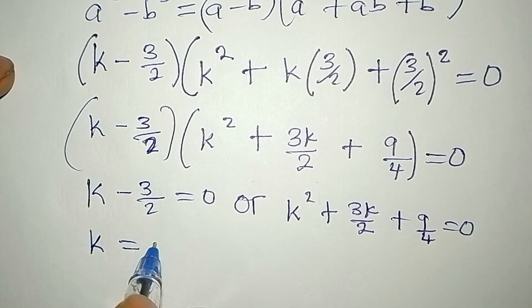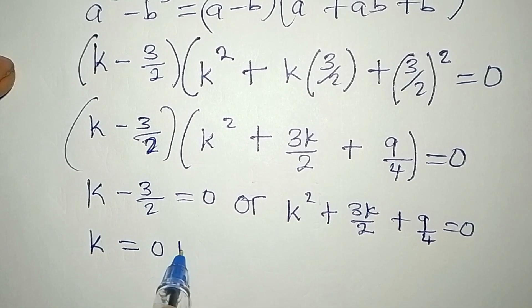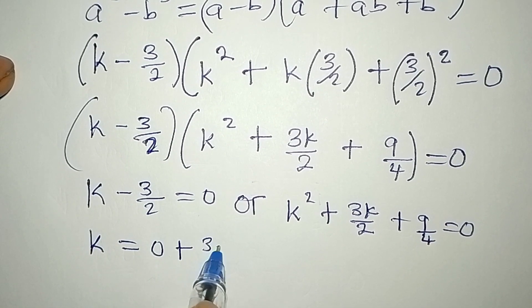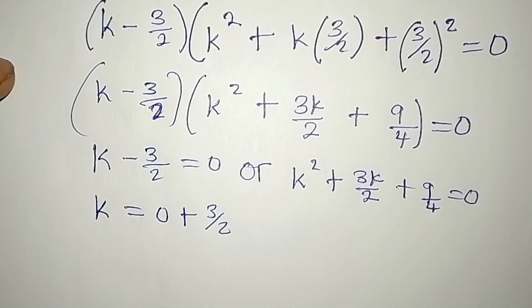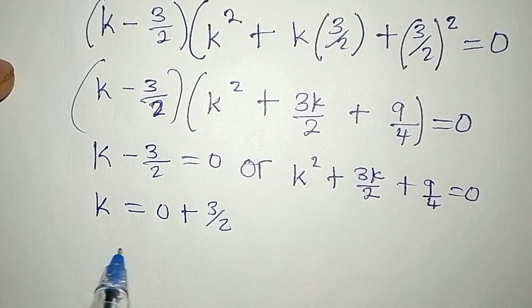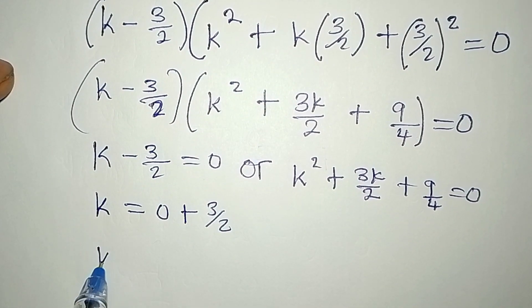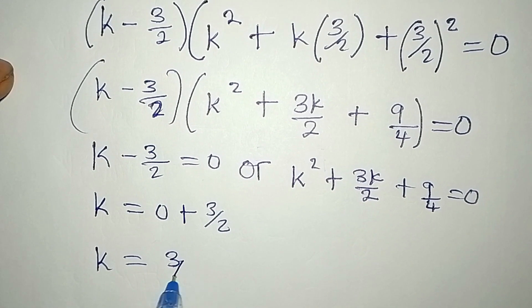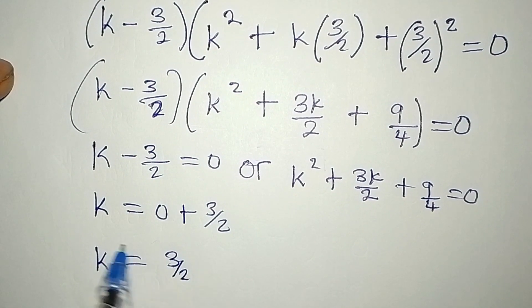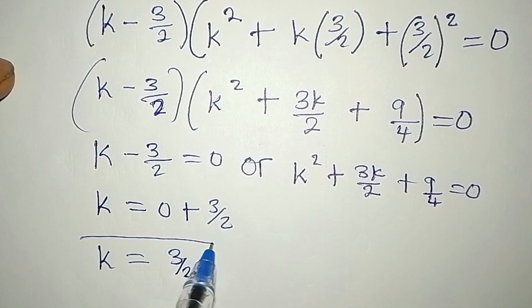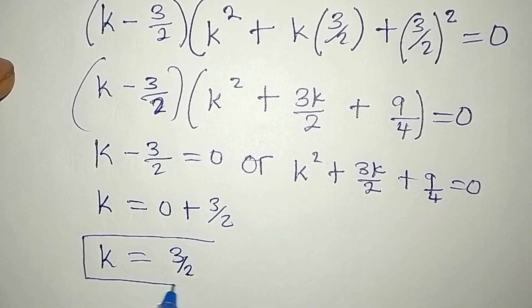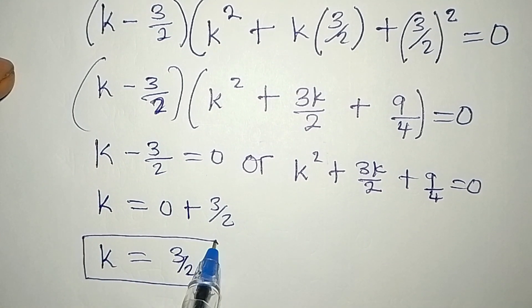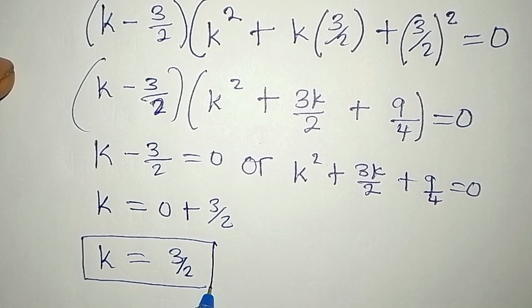From the first factor, k equals 3/2. This becomes the first solution to the equation.